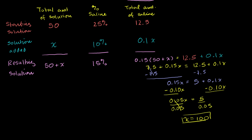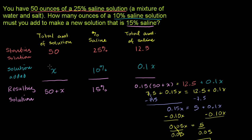So we're done. We figured out that x equals 100. If you add 100 ounces of 10% saline solution, you will end up with 150 ounces of 15% saline solution. 10% of 100 is 10 ounces of saline added, so you have 12.5 plus 10 equals 22.5 ounces of saline in 150 ounces of solution, which is indeed 15%.